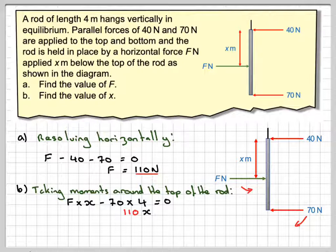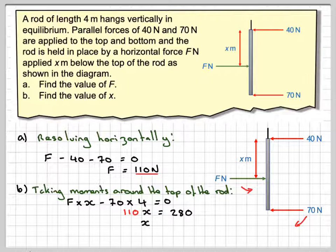We get 110X, because F is 110, equals 70 times 4, which is 280. Therefore X equals 280 divided by 110, which is 2.545, or 2.55 meters correct to three significant figures.